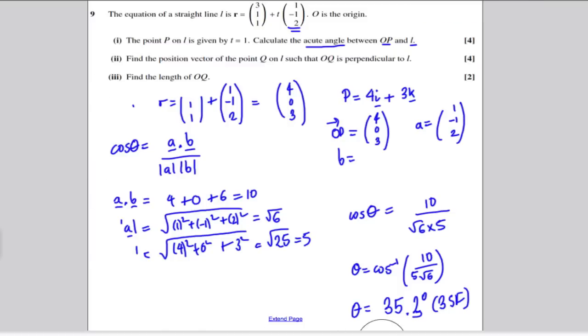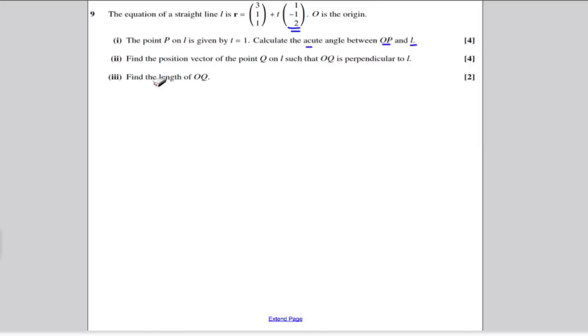Let's continue with this question. We have done part 1. Now it says find the position vector of the point Q on the line L such that OQ is perpendicular to L. Well, we know Q is on the line L, so Q has some position vector. For some number T, it's got the value (3+T, 1-T, 1+2T). For some value of T, this would be the position vector of Q, and also it would be the vector OQ as well, the origin to Q. So this could be seen as the direction to get from O to Q.